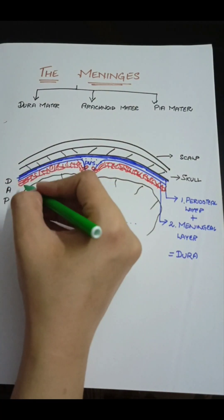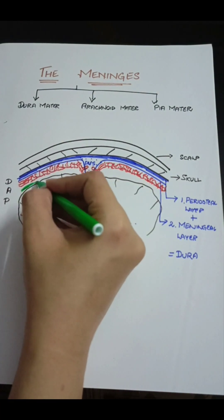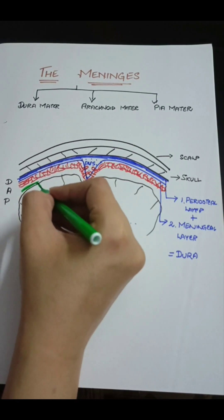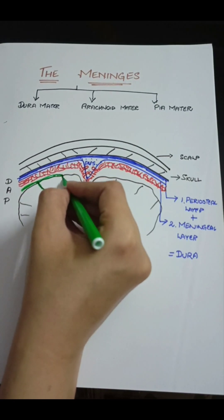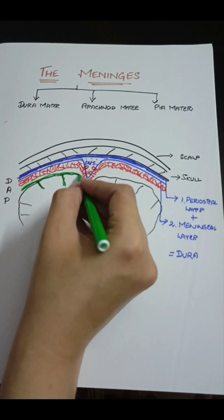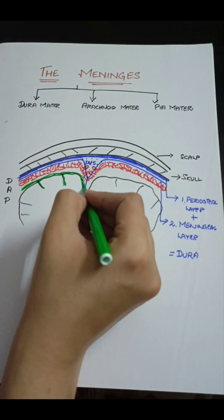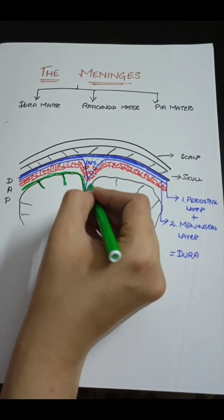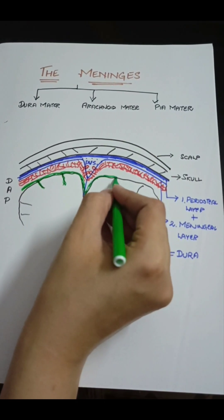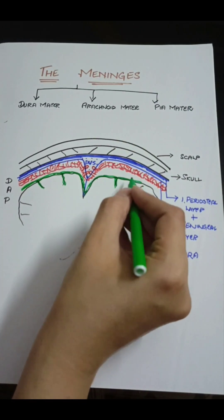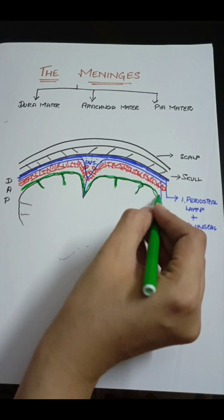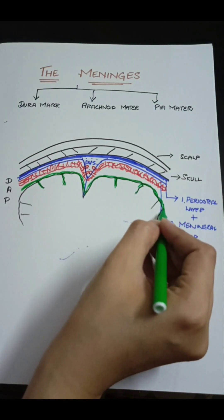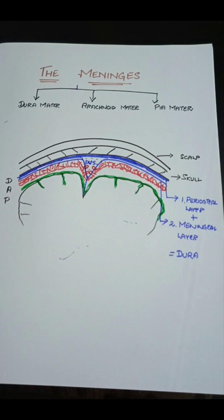Deep to the arachnoid mater, the third layer is the pia mater. This is the layer which very closely adheres to the surface of the cerebral hemispheres, especially in the areas of the sulci and gyri where it dips inside. The pia mater is the vascular layer and is particularly important in the roof of the third and fourth ventricles.